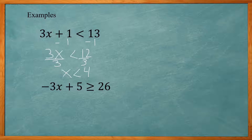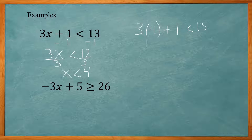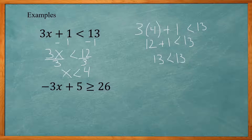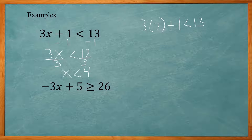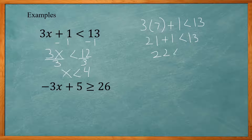If I try a number 4 or greater, that will not work. Let me try 4: 3 times 4 plus 1 is less than 13 gives 12 plus 1, which is 13 less than 13. But 13 is not less than 13 — it's equal, so this is false. If I try 7: 3 times 7 plus 1 is less than 13 gives 22 less than 13, which is also false. So only numbers less than 4 work in this inequality.